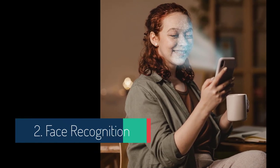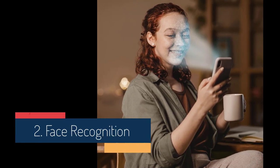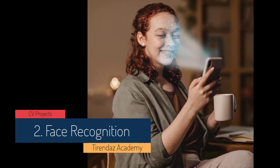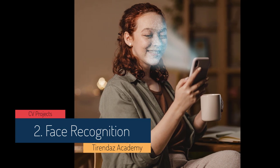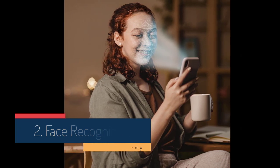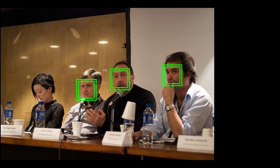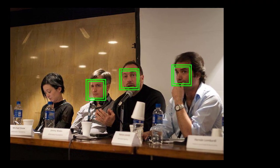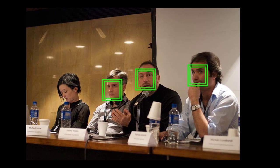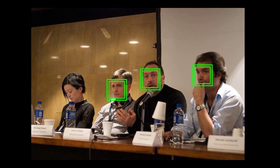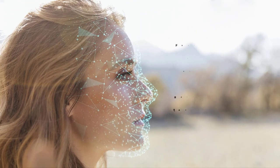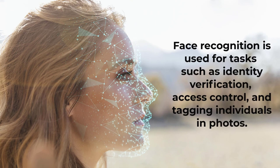Another computer vision project I'm going to share is face recognition. This is a computer image-based application that most beginners enjoy doing. Think about it — an app that sees your picture and identifies you by name sounds great, right? Your goal in this project is to extract distinctive features from a person's face and then use these features to create a unique facial signature. Face recognition is commonly used for tasks such as identity verification, access control, and tagging individuals in photos.